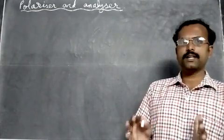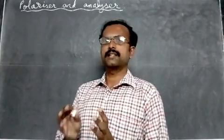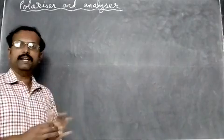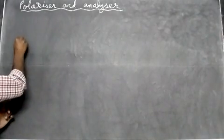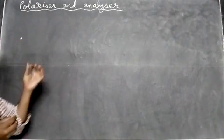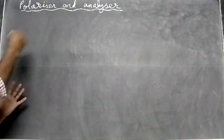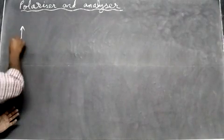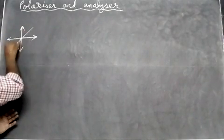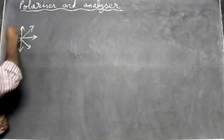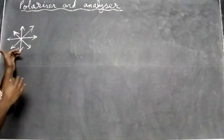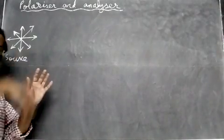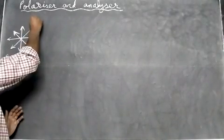Let's study about what's the polarizer and analyzer, but before going to polarizer and analyzer, let's see a property of light. We know light is a transverse wave that can vibrate in any direction. Taking a point source of light here, light rays go in all directions and can vibrate up and down, horizontally, or any direction it likes. So this we say is unpolarized light.